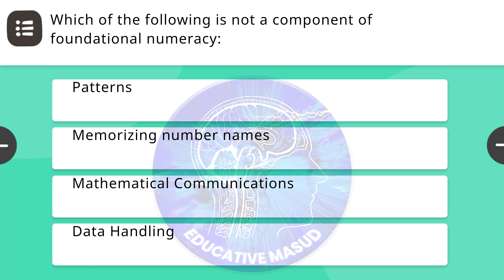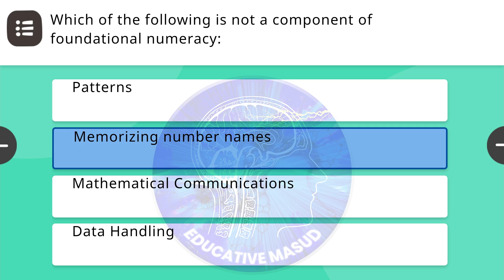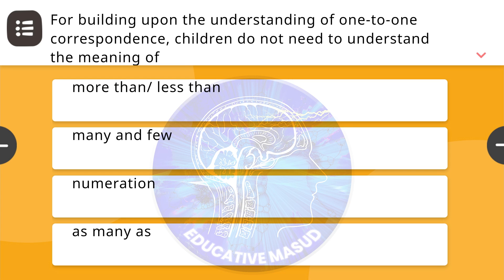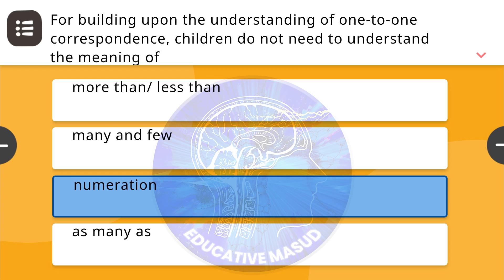Next question: which of the following is not a component of foundational numeracy? Correct answer is memorizing number names. Next question: for building upon the understanding of 1-to-1 correspondence, children do not need to understand the meaning of? Correct answer is numeration.